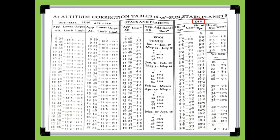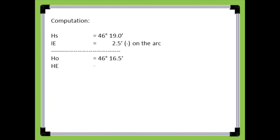Using the altitude correction table of the sun, stars, and planets from the nautical almanac, locate the dip column. Under the dip column, locate the height of eye correction column, then locate the meter column and move down until 8.8 meters and 9.2 meters is found. The height of eye of 9.0 meters is in between that meter range, and the corresponding correction value is 5.3 minutes. Subtract it from the observed altitude of planet Venus; the result is the apparent altitude of planet Venus, which is 46 degrees and 11.2 minutes.